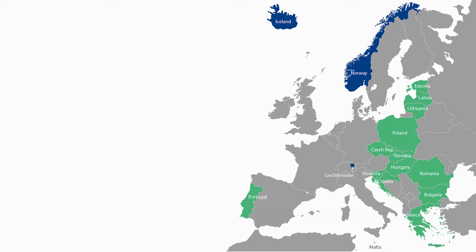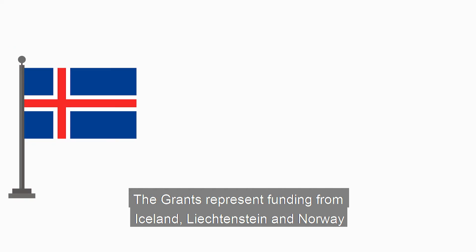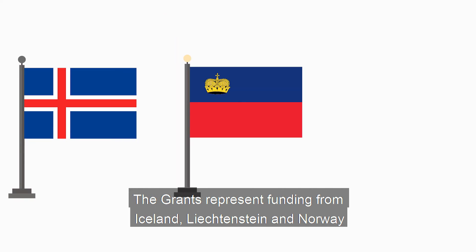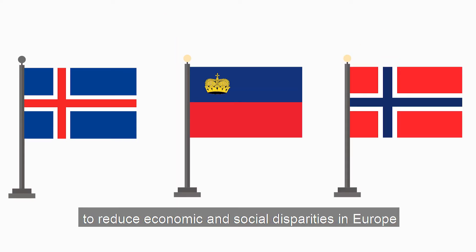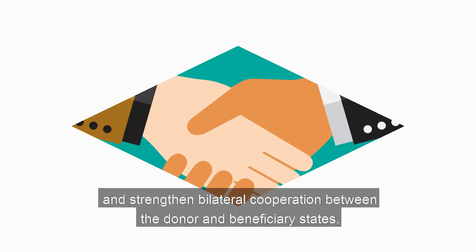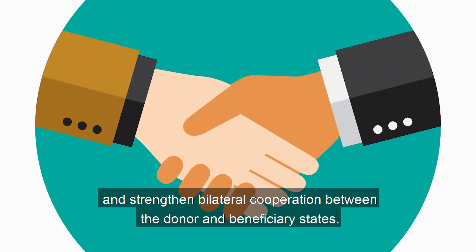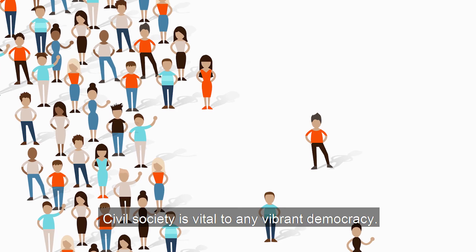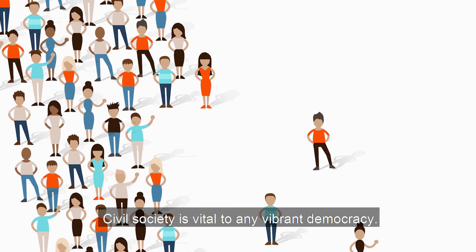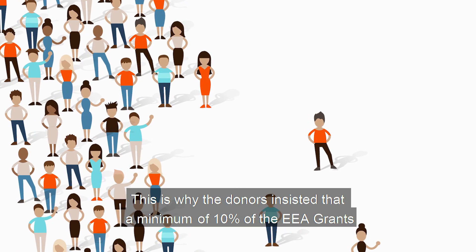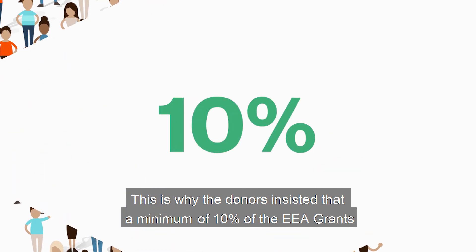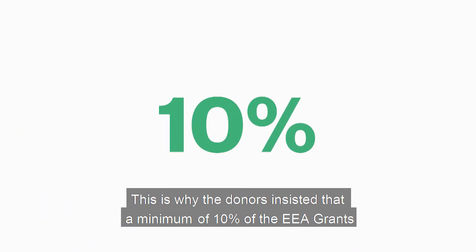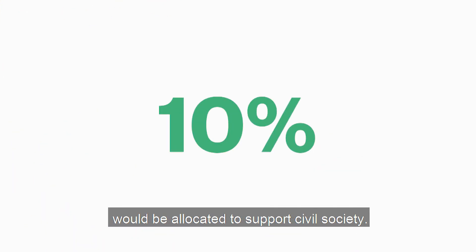The grants represent funding from Iceland, Liechtenstein and Norway to reduce economic and social disparities in Europe and strengthen bilateral cooperation between the donor and beneficiary states. Civil society is vital to any vibrant democracy, and this is why the donor countries insisted that a minimum of 10% of the EEA grants be allocated to support civil society.